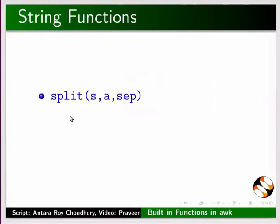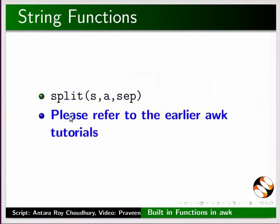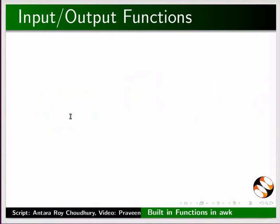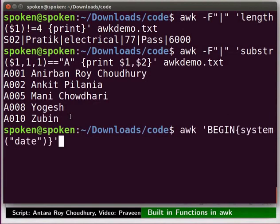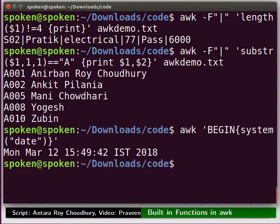We have seen the split function earlier, so I am not explaining the details here. Please refer to the earlier ARC tutorials if you have any doubt. There are some other functions related to input-output. The system function helps us to run any Unix command within ARC. Now we will run the Unix command date through the ARC command. In the terminal, type the command as shown and press Enter. Today's date and time is displayed on the terminal as output. In real world scenarios, we may want to print the system date before displaying the required output, so we would need to execute system commands from within ARC.